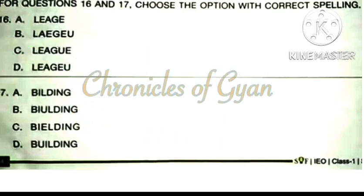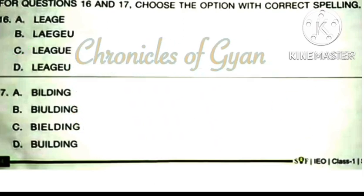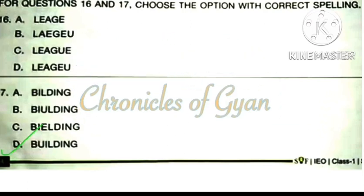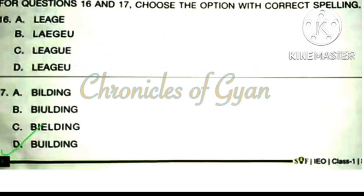Question 17: The correct spelling is option D: B-U-I-L-D-I-N-G. Building.